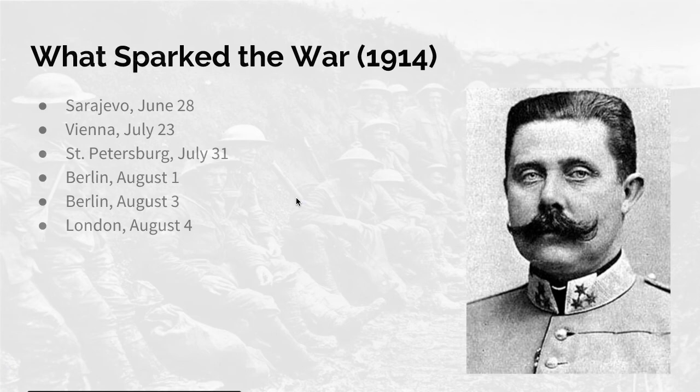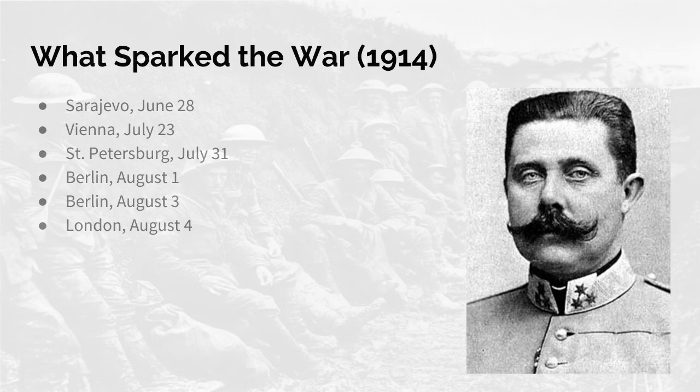So what sparked the war? Sarajevo on June 28th was what sparked the war. A Serbian nationalist assassinated Archduke Francis Ferdinand — his name was Archduke Francis Ferdinand — and he was the leader of Austria-Hungary. Him and his wife were assassinated basically during a parade in their country. Vienna, July 23rd, was the following event: Austria-Hungary invades Serbia because of the nationalist that killed Archduke Franz Ferdinand.